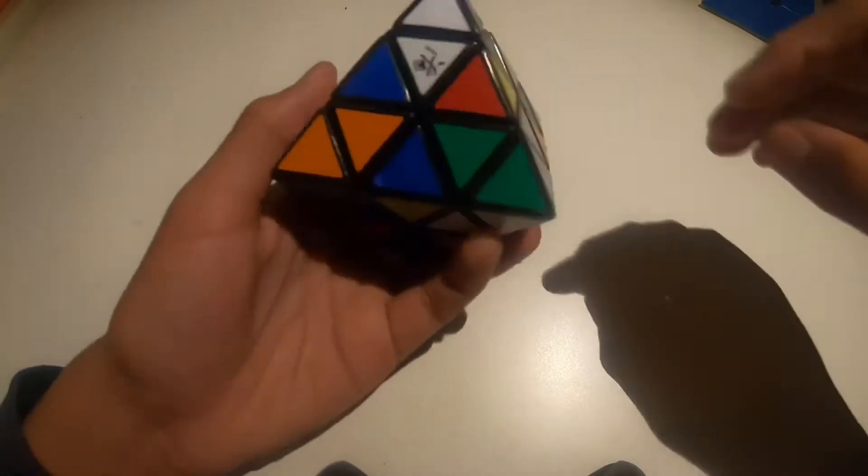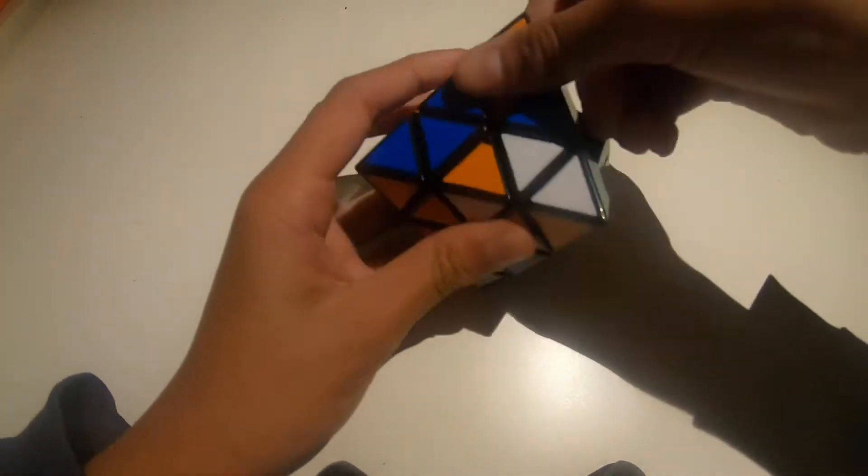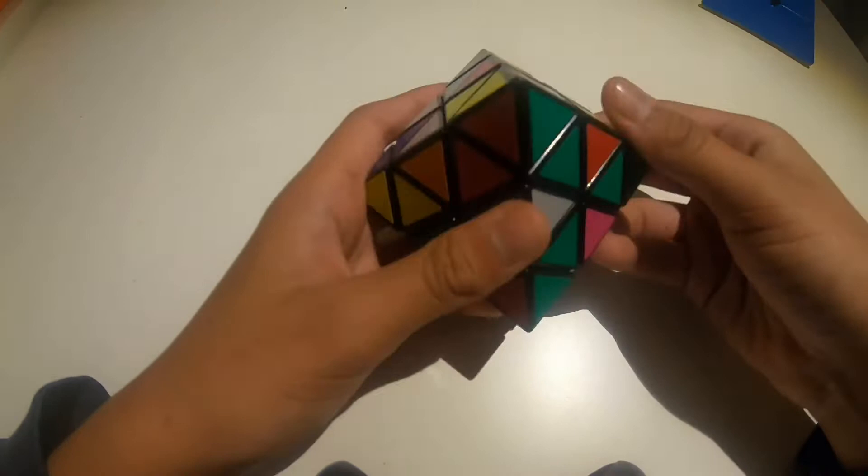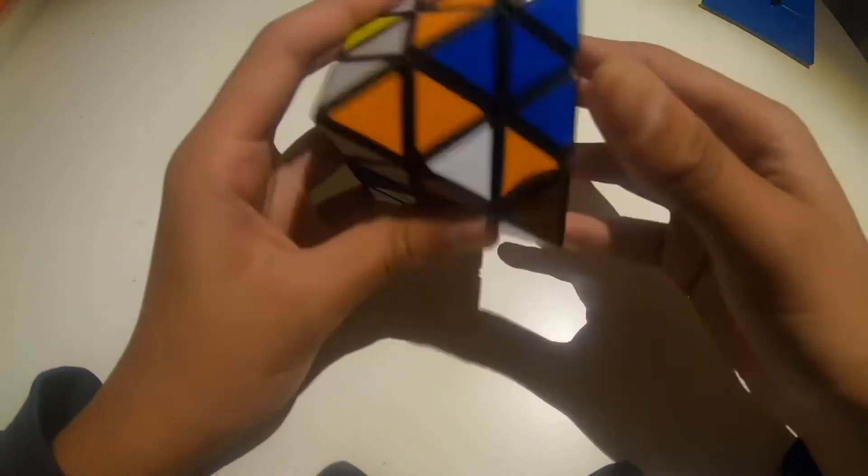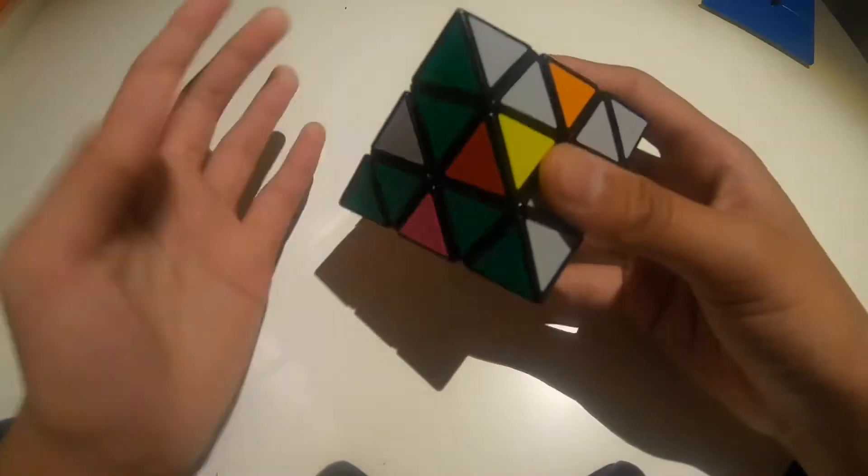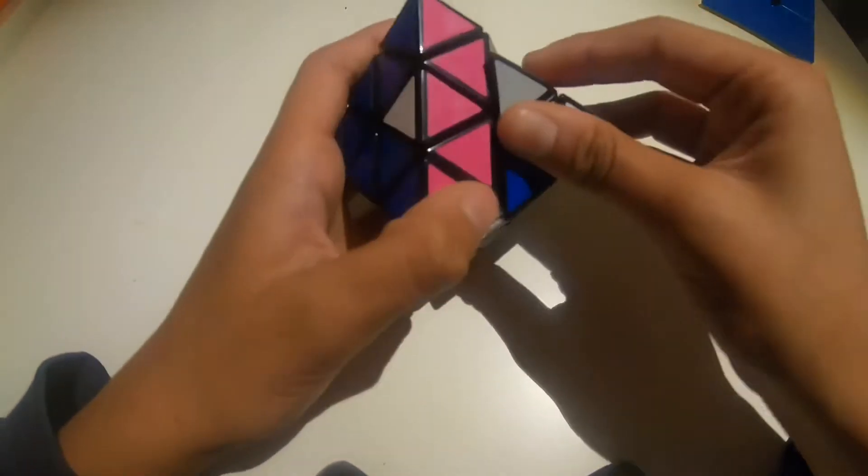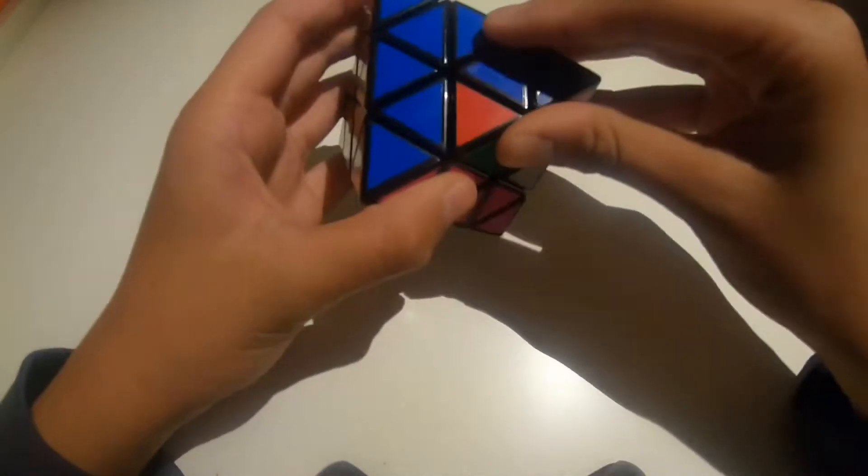What I'm going to do is I'm just going to get all these the same, if that makes sense. Basically, I've got all the centers the same, and I think I should be able to just do commutators. I mean, not three cycles, but just do commutators.